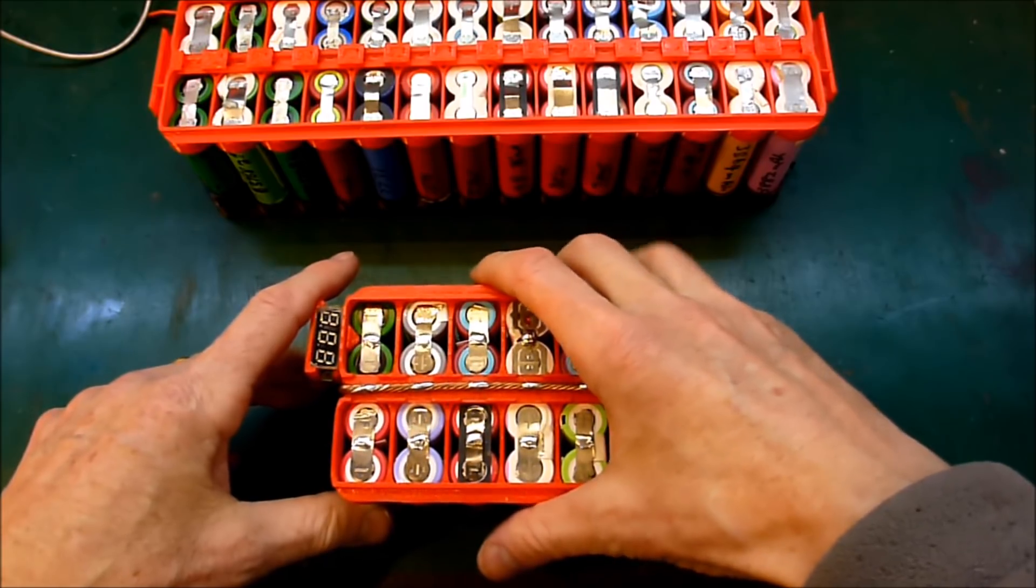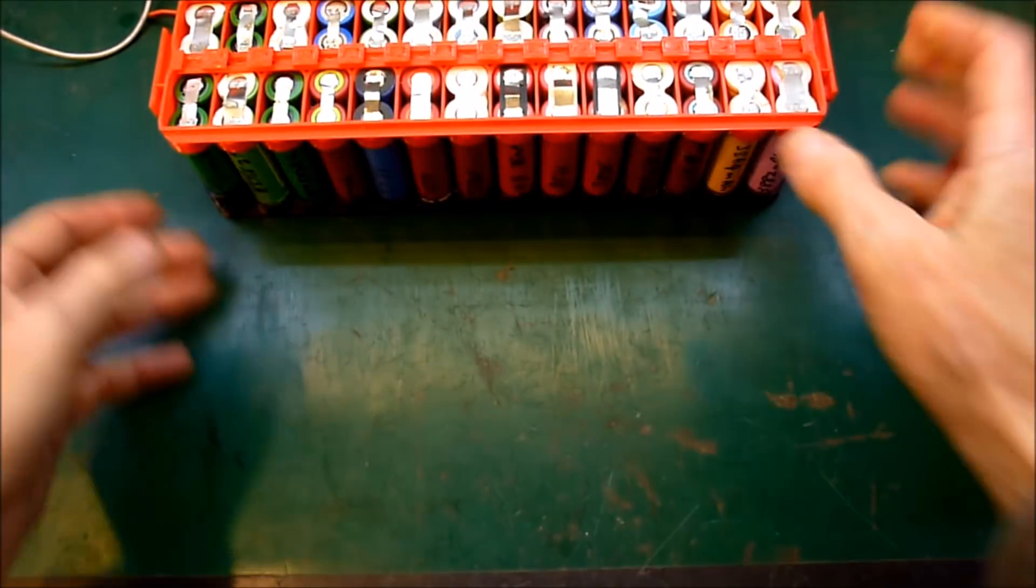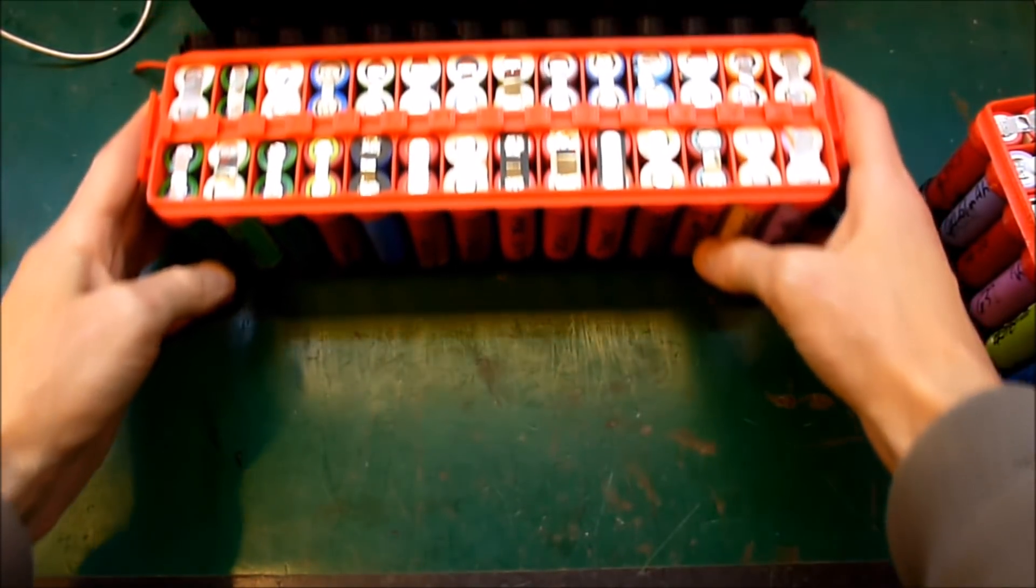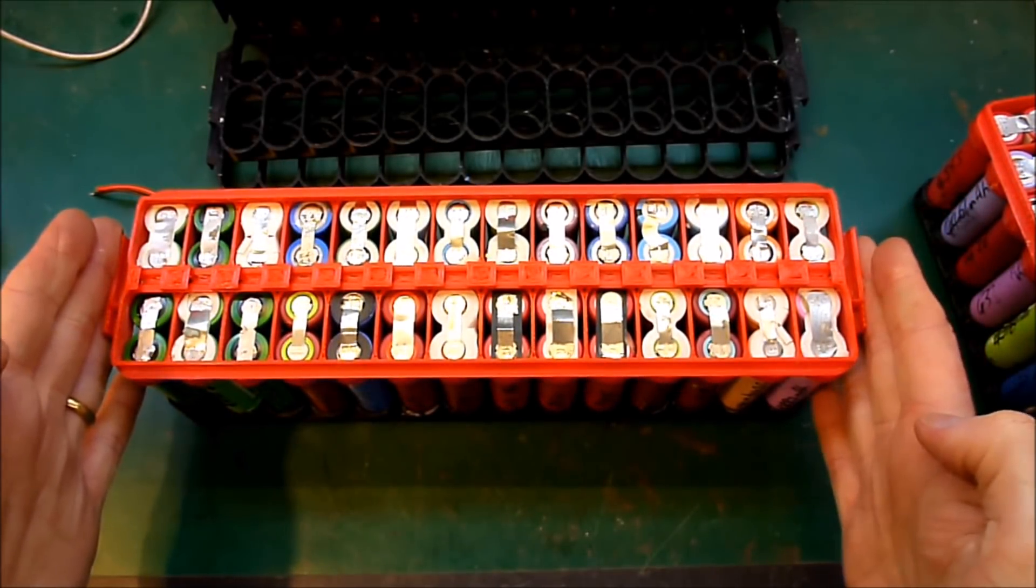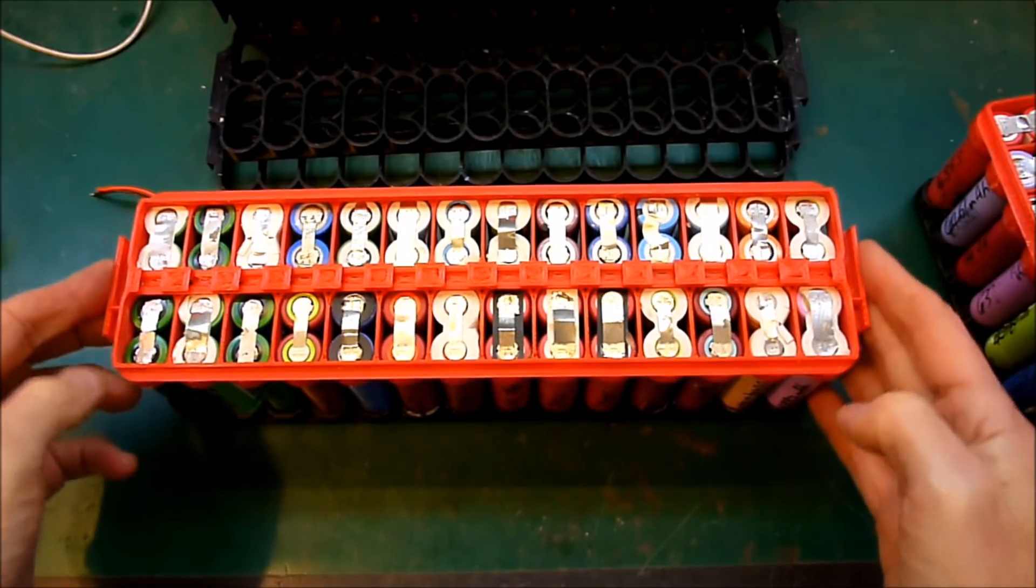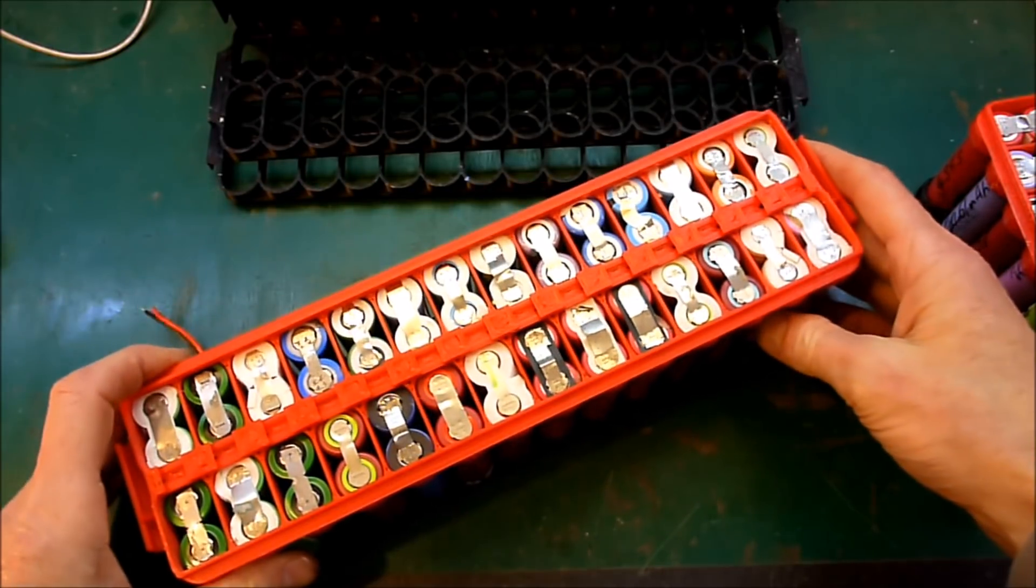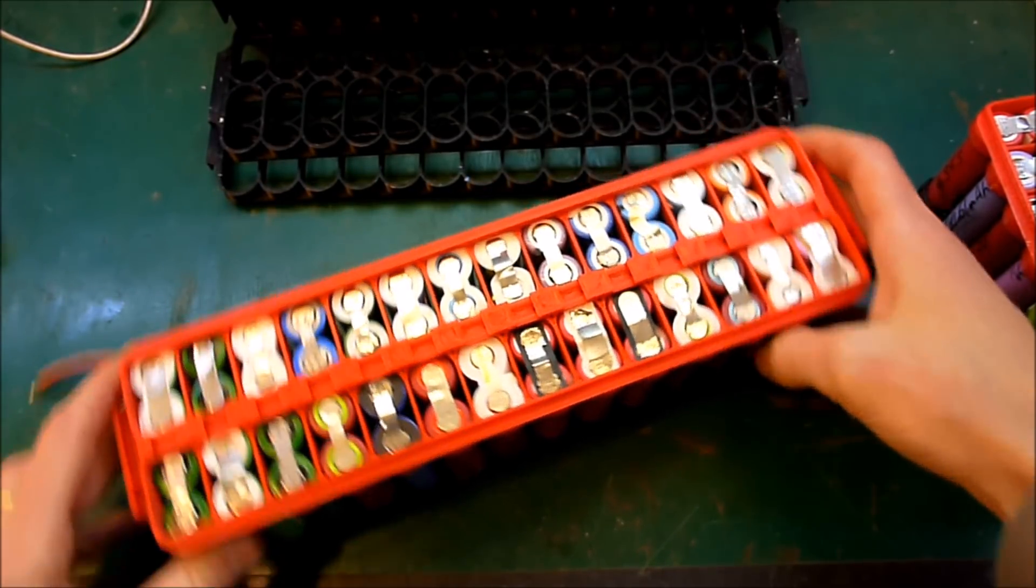My old printer has died and now I've got a Creality CR-10 Mini which will do 300mm wide, which is what this is. This is actually 301 and I have to print it diagonally on the print bed.